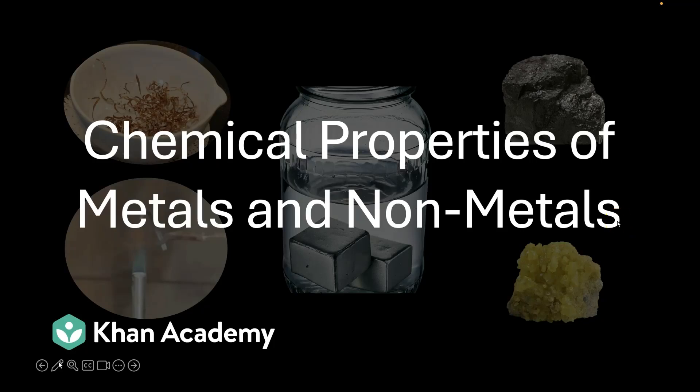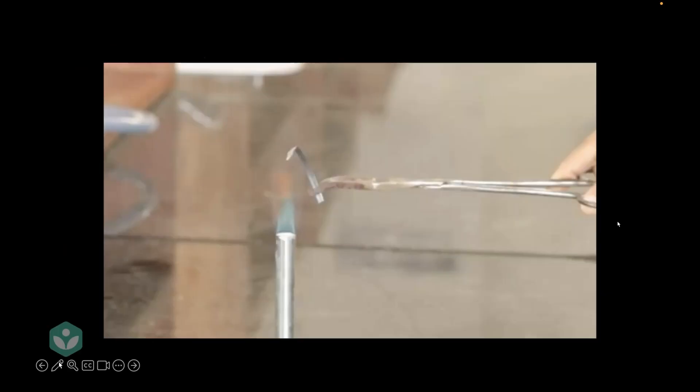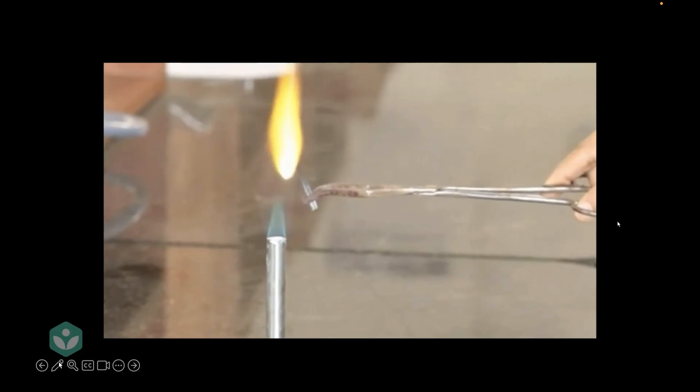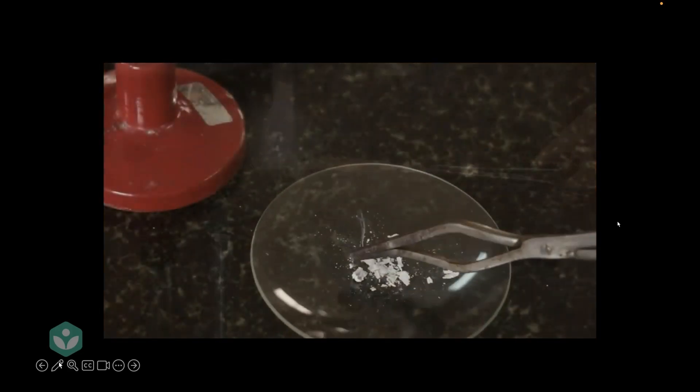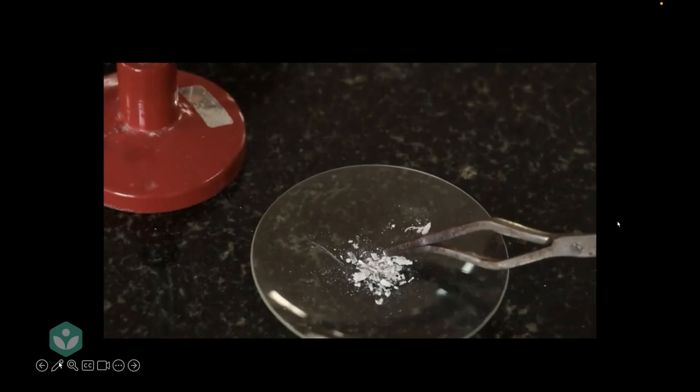In this video, we'll discuss a few chemical properties of some metals and non-metals. What happens if you take a piece of magnesium and begin heating it? Well, it starts burning with a dazzling white flame, and then it leaves a residue of some kind of whitish powder.